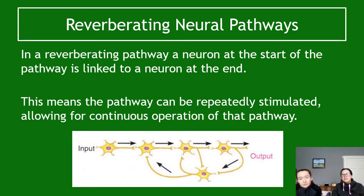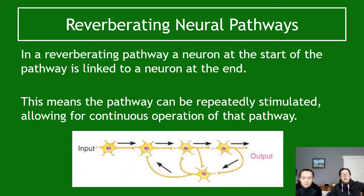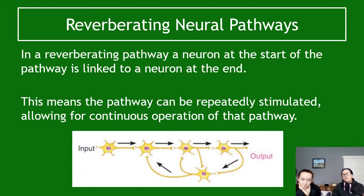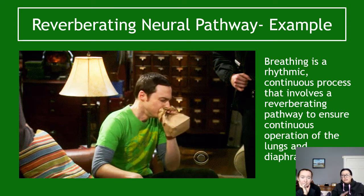Reverberating neural pathways are the last type. In a reverberating pathway, one of the later neurons links back to one of the earlier ones. A signal is generated down the pathway, then one neuron links back near the start, causing the signal to essentially loop back and re-trigger itself. This means the pathway can be repeatedly stimulated, allowing for continuous operation. The most common exam question is identifying a reverberating pathway from its picture — the key is spotting the neuron going back to the start.